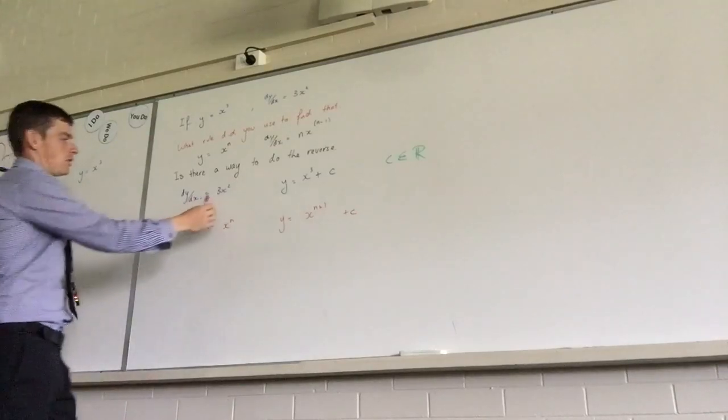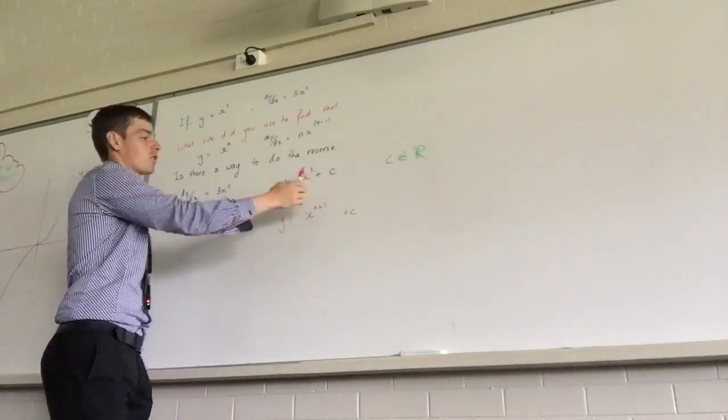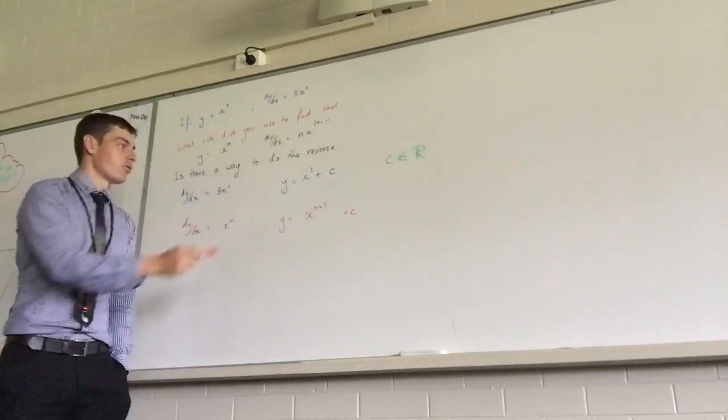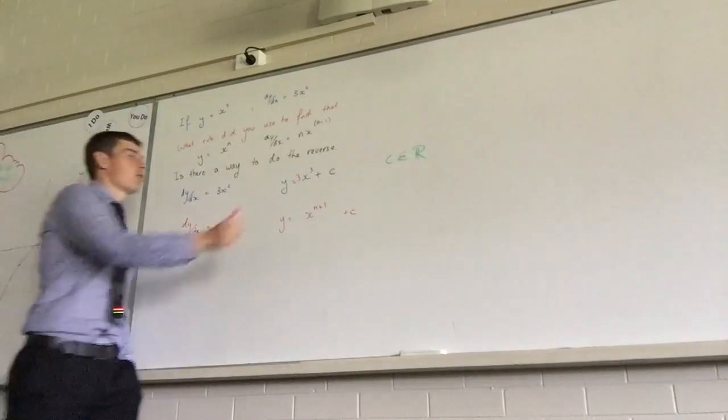Let's have a look here. n plus 1. He's got the 3. Because it was 2, now it's 3. That's all good. He's got the c. What's he missing? Because that would read this, wouldn't it? It would read 3x cubed. Divide by n.